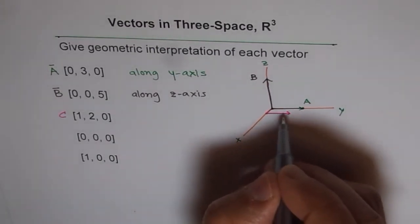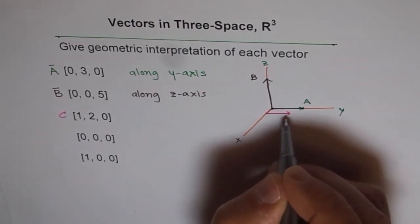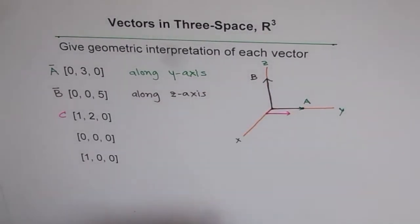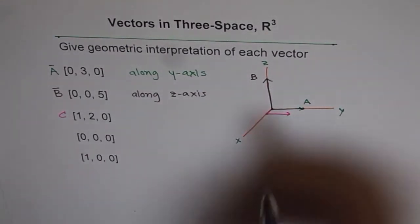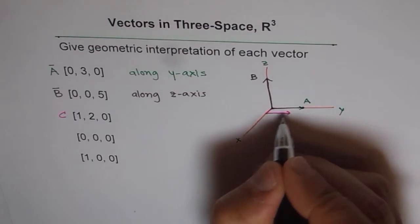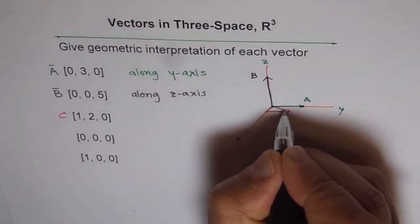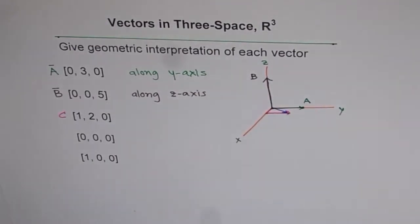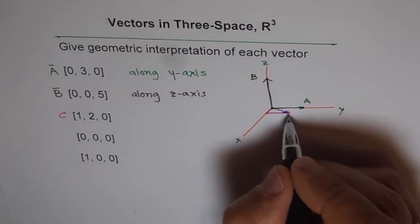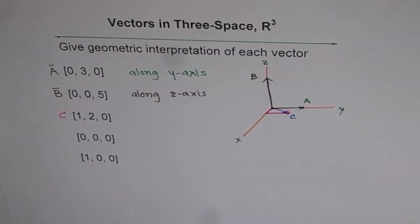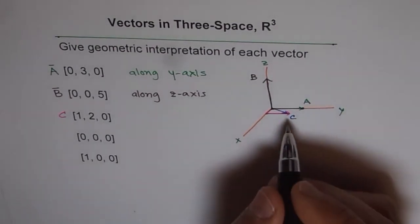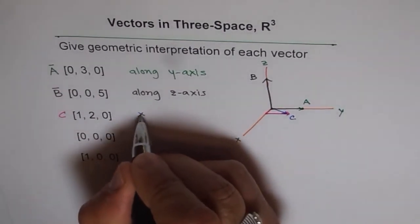This much, and there you are. This is our initial point, that's the terminal point. Now the vector will have a tail at the origin and will be directing towards the head. So the vector will be along this - this is our vector C. As you can see, vector C is in the xy-plane.